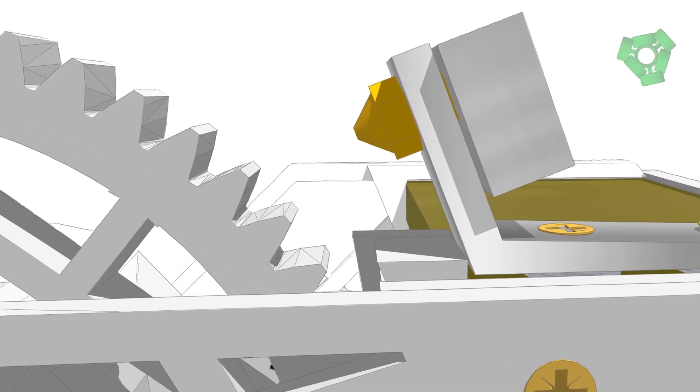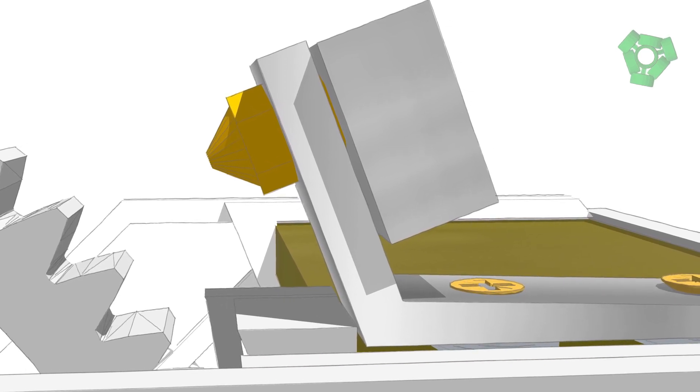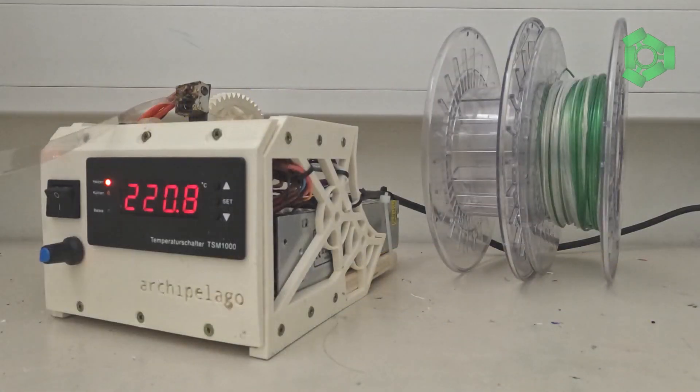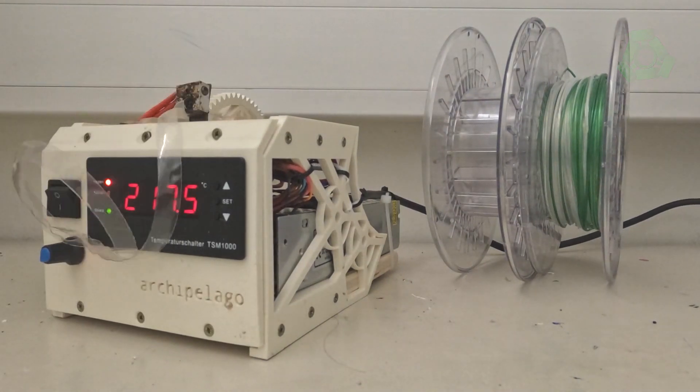Lastly, bend the right angle bracket so that the angle becomes larger and the brass nozzle points towards the uppermost point of the bobbin. Test your archipelago filament extruder to make sure all parts are working together properly.